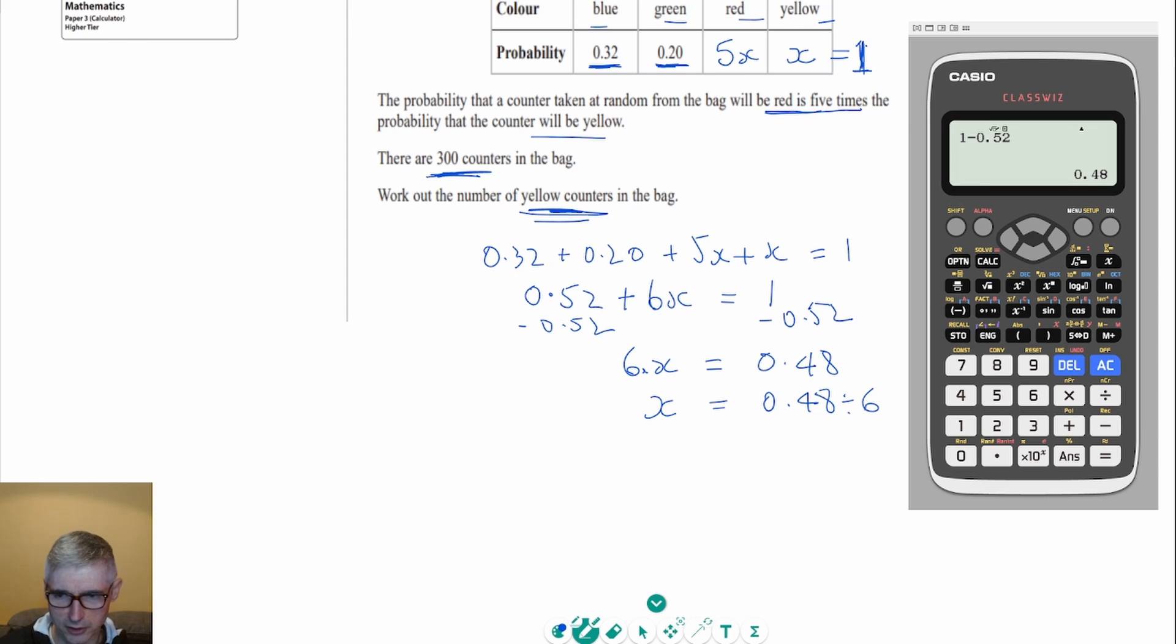So again, I'm just going to go to the calculator. And I'm going to take the answer I've already got there, divide that by 6, and just pressing the SD button again, 0.08. So that's the value of x. But that's just the probability of getting a yellow counter. In fact, I could show you that the probability of getting yellow is equal to 0.08.